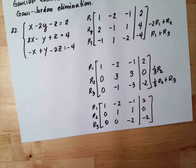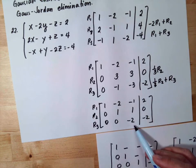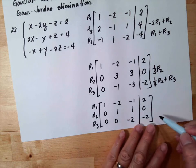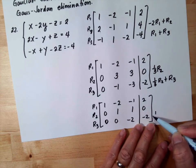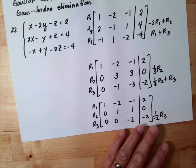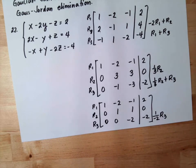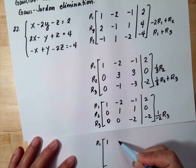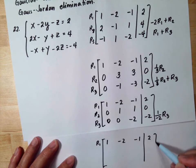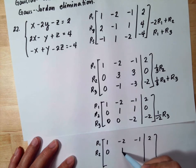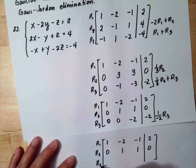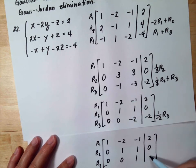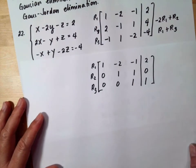Our next goal is to make the −2 in row 3 become 1. We divide row 3 by negative 2. Row 1 stays as 1, −2, −1, 2. Row 2 stays as 0, 1, 1, 0. For row 3: 0 ÷ (−2) = 0, 0 ÷ (−2) = 0, −2 ÷ (−2) = 1, −2 ÷ (−2) = 1. This is our new matrix in row echelon form.